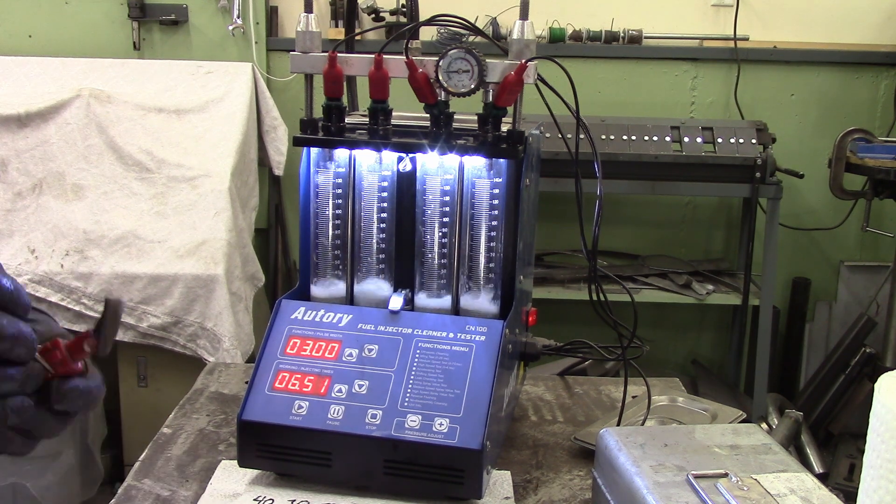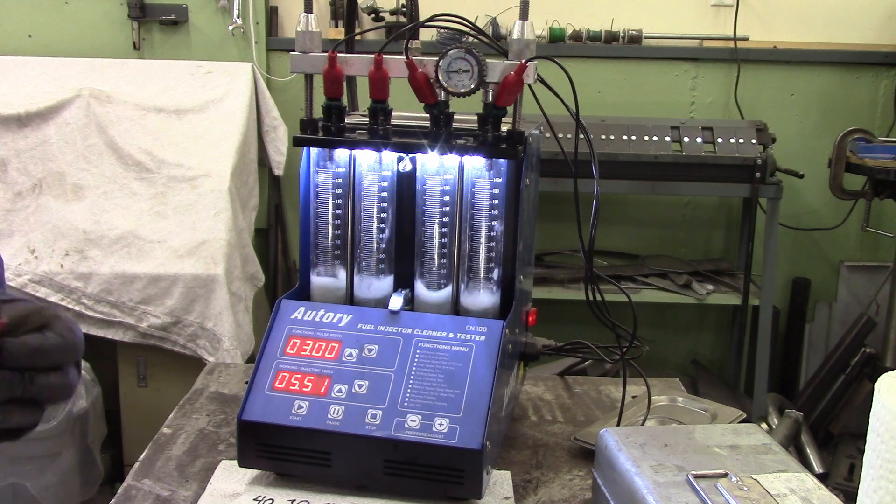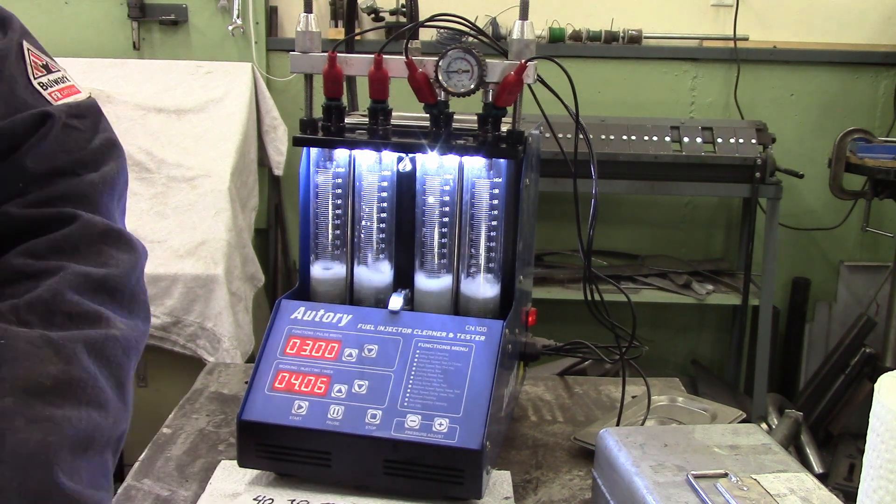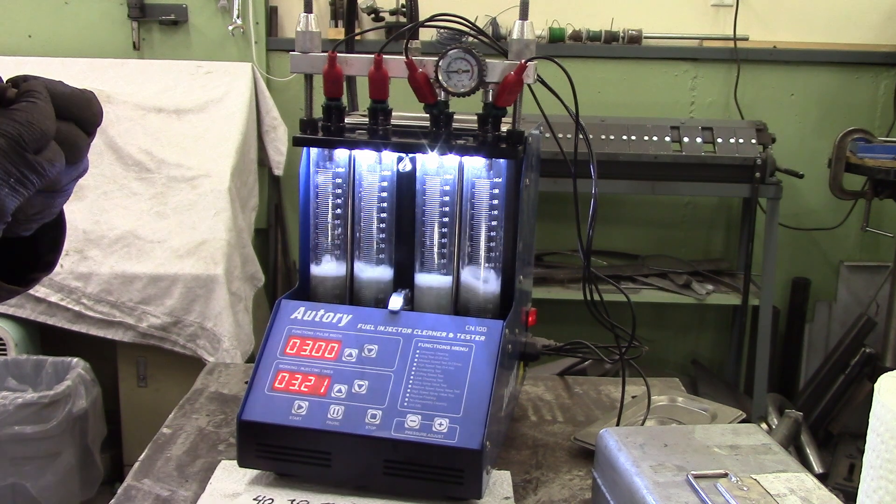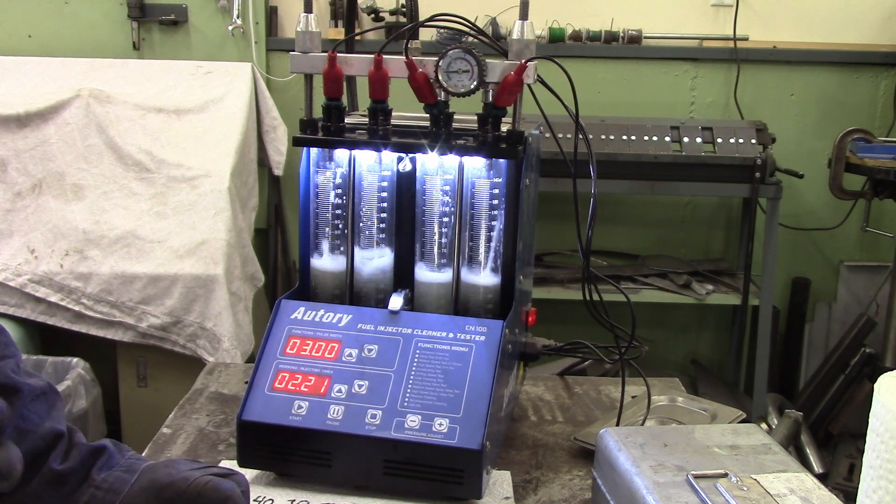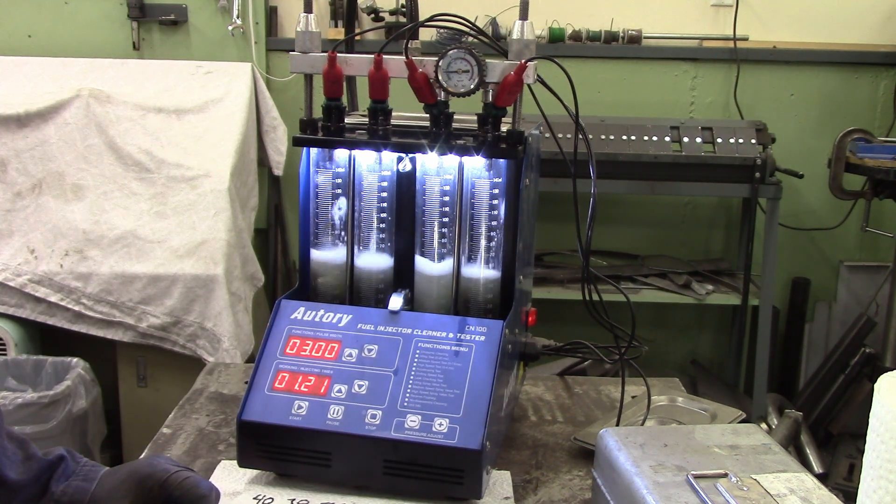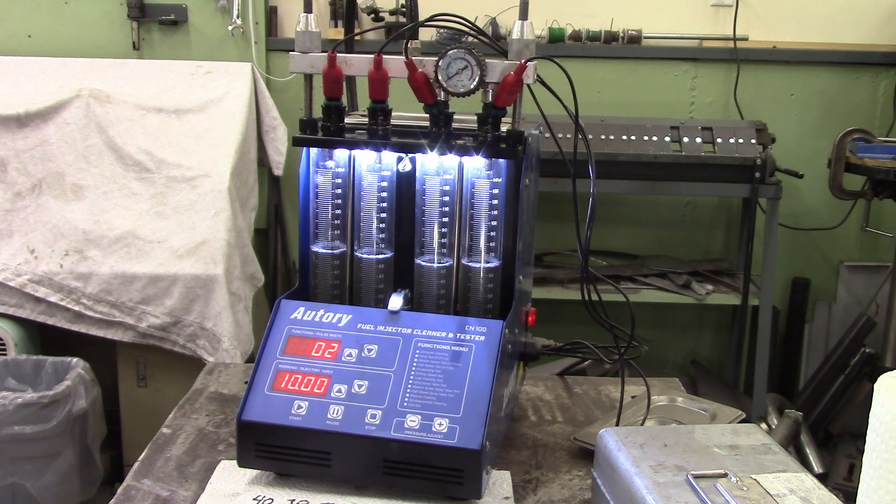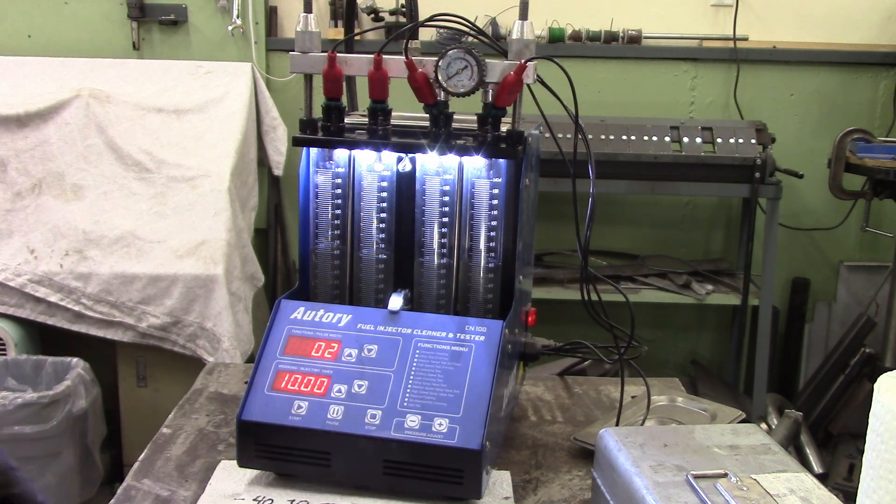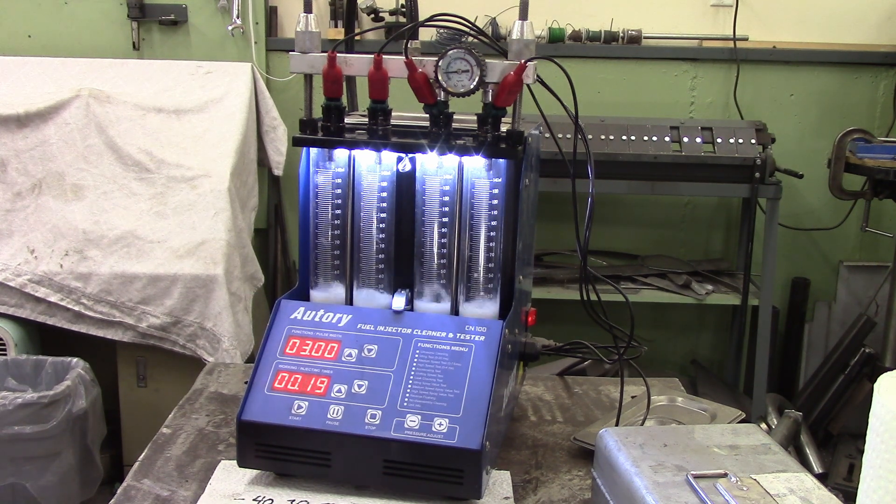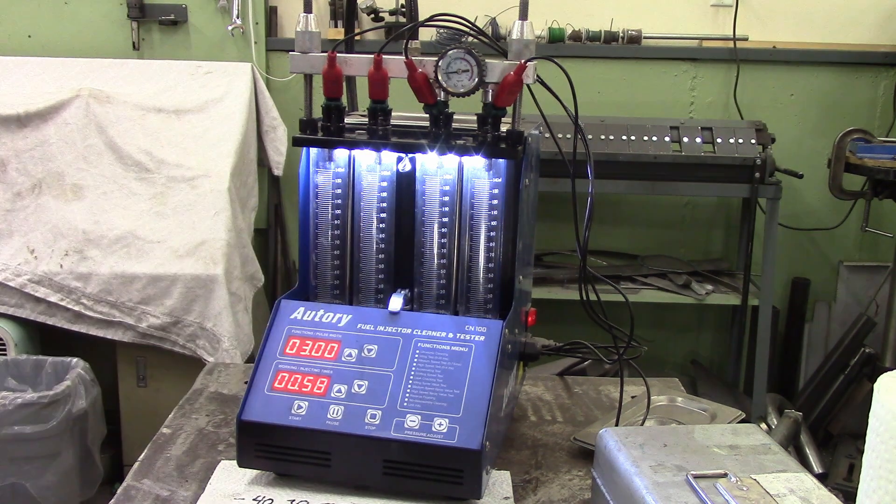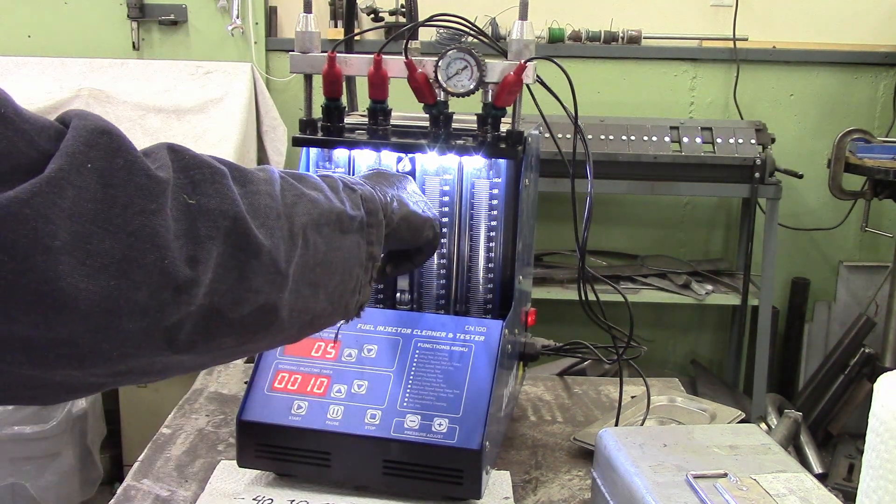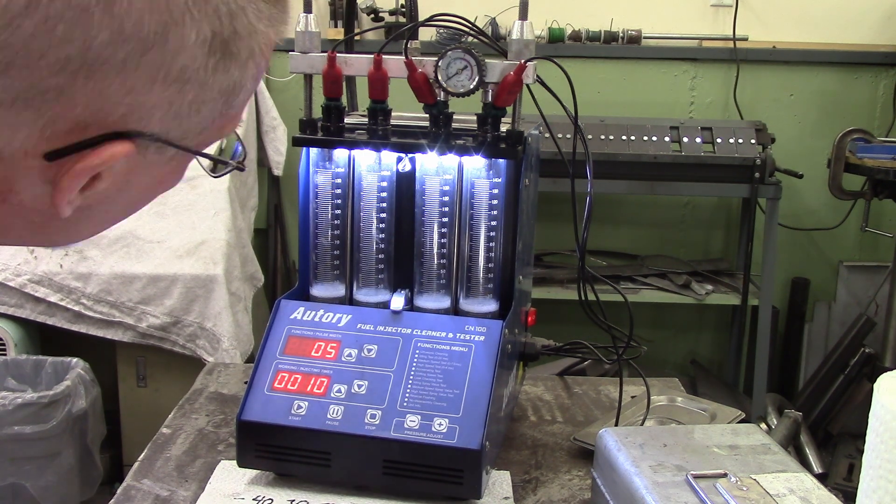I ran this through all of its different settings. There are a variety of different tests you can do. There's your idling test, which is a relatively low injector pulse width. There's a medium speed test, a high speed test. There's an acceleration test where it ramps itself up through ever increasing speeds or faster pulse widths. There's a shifting speed test. There's a leak checking test where it just gives you pressure but does not pulse the injectors. And that's where I found injector number three had a bit of an issue. Number three was consistently low and the cleaning didn't help it. It had a crack on the plastic tip. It didn't seem to be functionally an issue, but it sure did not flow consistently any better.